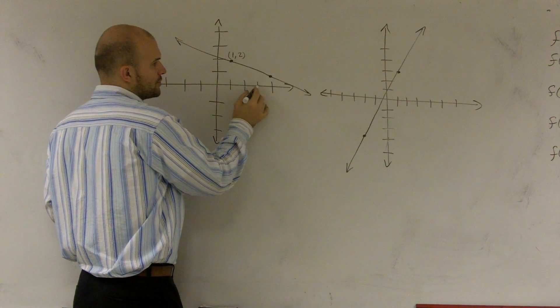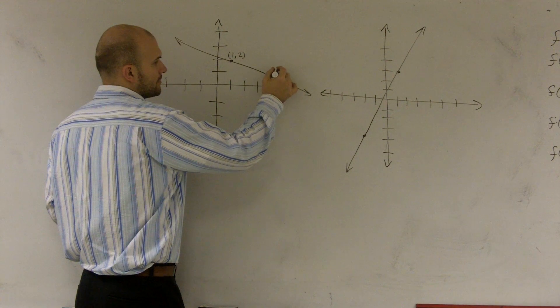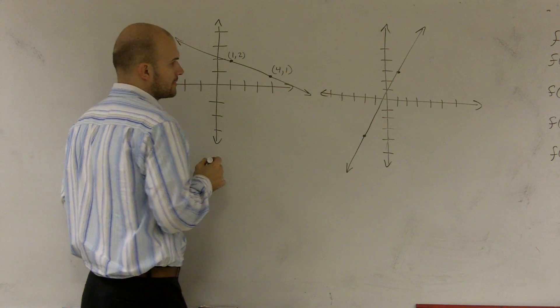And this is the point over one, two, three, four, up one. So four comma one, alright?